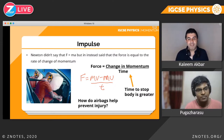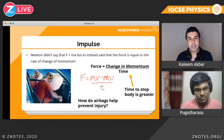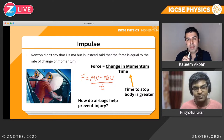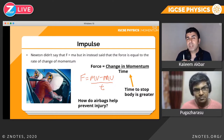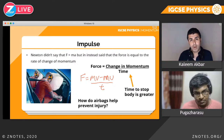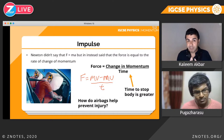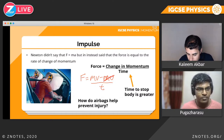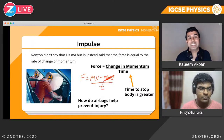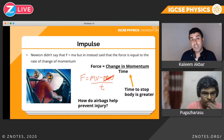F equals MV minus MU divided by T. MV is final momentum, MU is initial momentum, T is time, F is force. Pretend you are in a car that starts from rest — that makes MU zero, there is no initial momentum because the car wasn't moving. Let's pretend we're going at national speed limit: 70 miles per hour in the UK, or 120 kilometers per hour in most other countries.